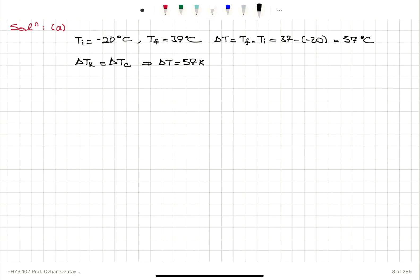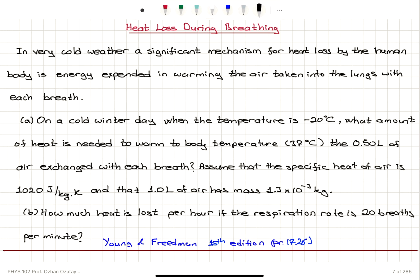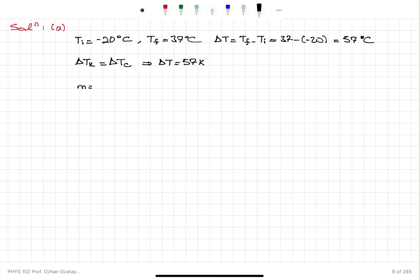Now, what is the mass of 0.5 liters of air? We assume that 1 liter of air has mass 1.3 times 10 to minus 3 kilograms. However, in each breath, we exchange 0.5 liters of air, so that will be half of it. So mass of the air that we exchange in each breath is 1.3 times 10 to minus 3 kilograms divided by 2, which will be 0.65 times 10 to minus 3 kilograms, which is 6.5 times 10 to minus 4 kilograms.